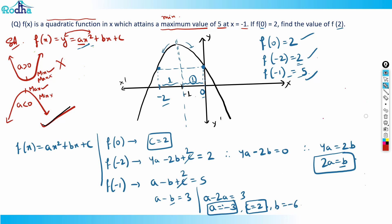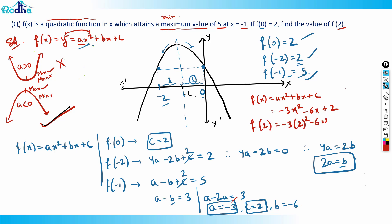So the equation becomes f(x) = minus 3x² minus 6x plus 2. Now I need to find f(2). Putting x = 2: f(2) = minus 3 × 4 minus 6 × 2 plus 2 = minus 12 minus 12 plus 2 = minus 22. So minus 22 is the answer.